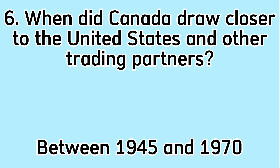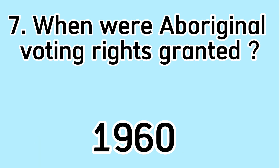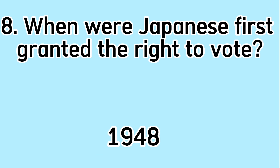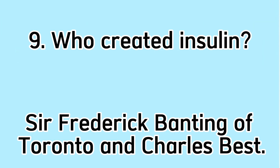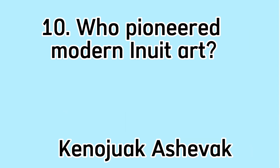When did Canada draw closer to the United States and other trading partners? Between 1945 and 1970. When were Aboriginal voting rights granted? 1960. When were Japanese Canadians first granted the right to vote? 1948.